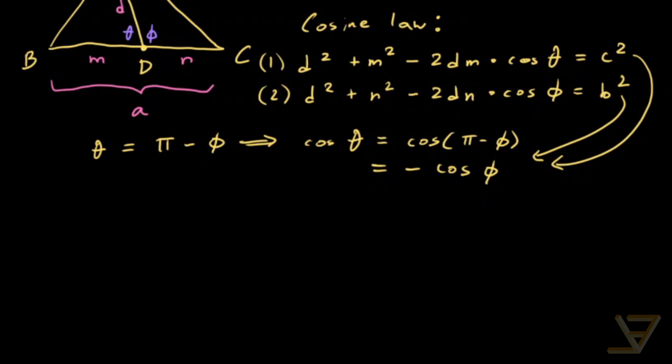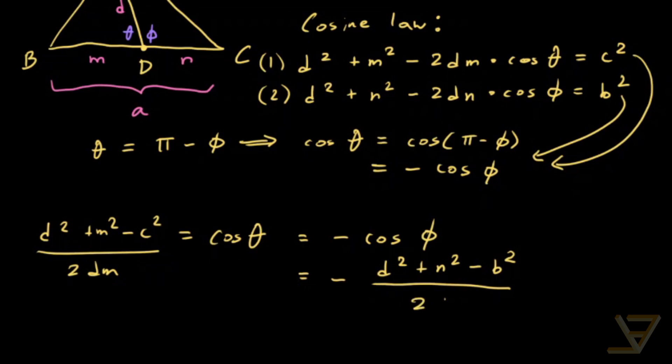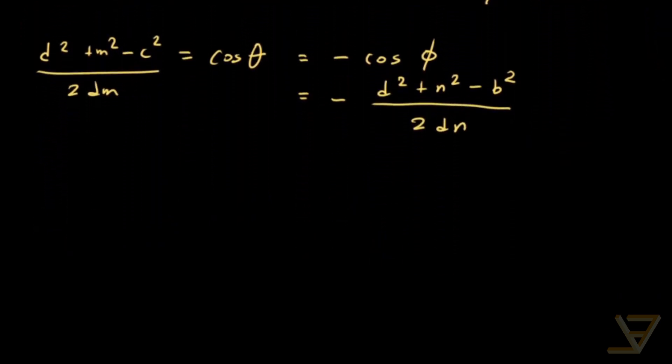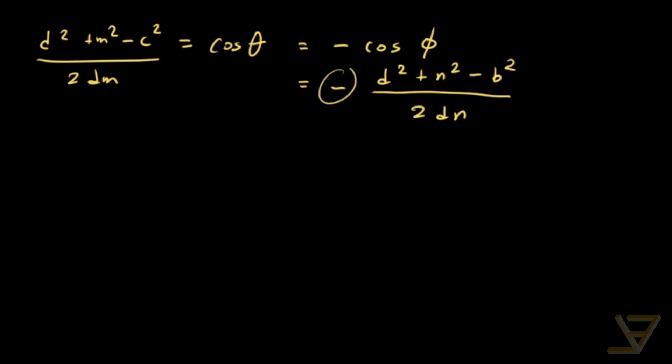We find that cos theta is equal to d squared plus m squared minus c squared over 2dm. And that's equal to negative cos of phi. And that, by the second equation, is equal to negative of d squared plus n squared minus b squared divided by 2dn. And don't forget the negative sign here, that's important. So that negative sign turns us into b squared minus d squared minus n squared over 2dn.